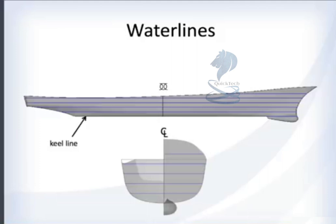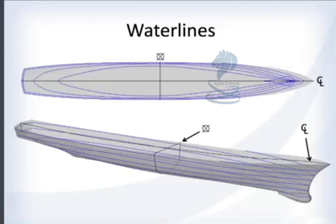As an example, take water lines. If you take the water line plane, make copies of it and run it from the keel line — the bottom of the hull — all the way up to the top deck, you get these blue lines. From the side and front they look straight because they are horizontal slices of the hull, but from the top or from an oblique view you get a sense of the curvature of the ship as it changes from the keel up to the top decks.